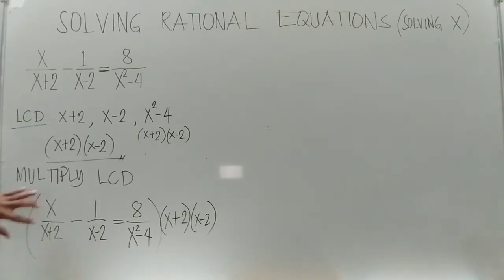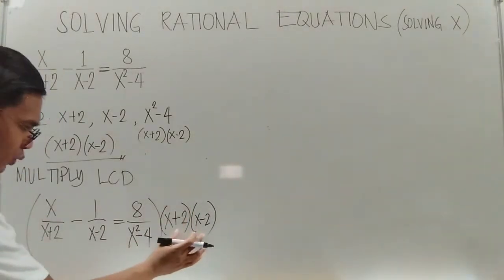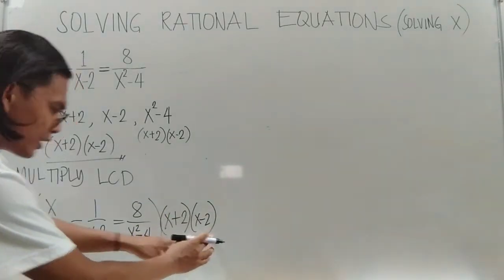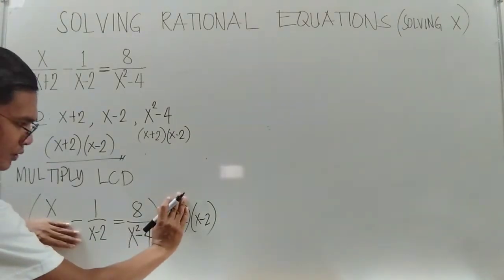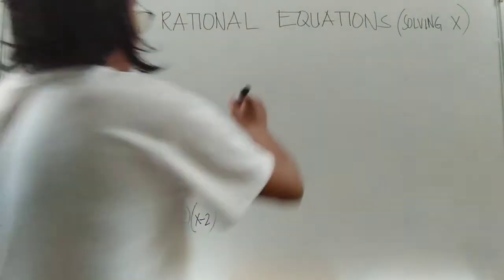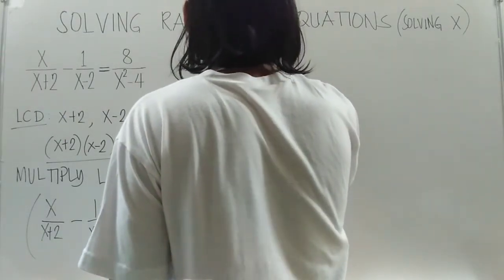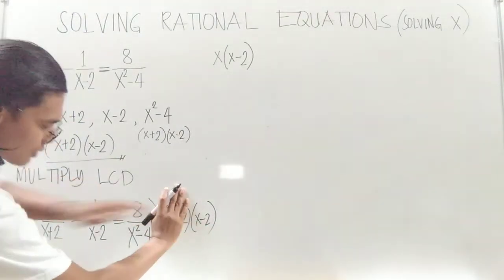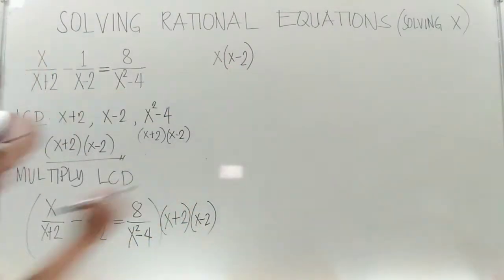We have x plus 2 as the denominator of x. Just cover x plus 2 and x plus 2, because we multiply this quantity to x. So we have x times (x plus 2)(x minus 2) divided by (x plus 2). Covering x plus 2, the remaining LCD is (x minus 2) and the numerator is x.